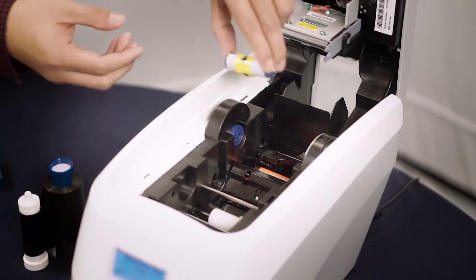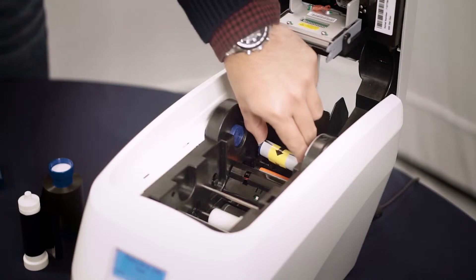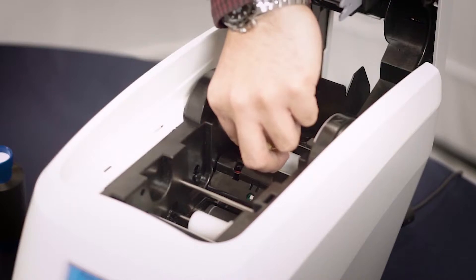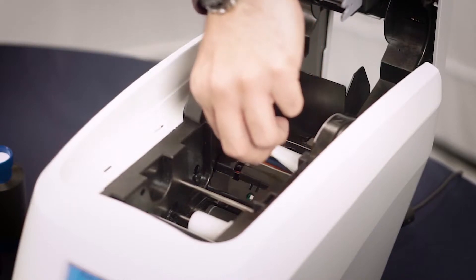With the arrows facing downwards, put the new tacky roller into place. Remove the protective cover by pulling gently on the yellow strip.